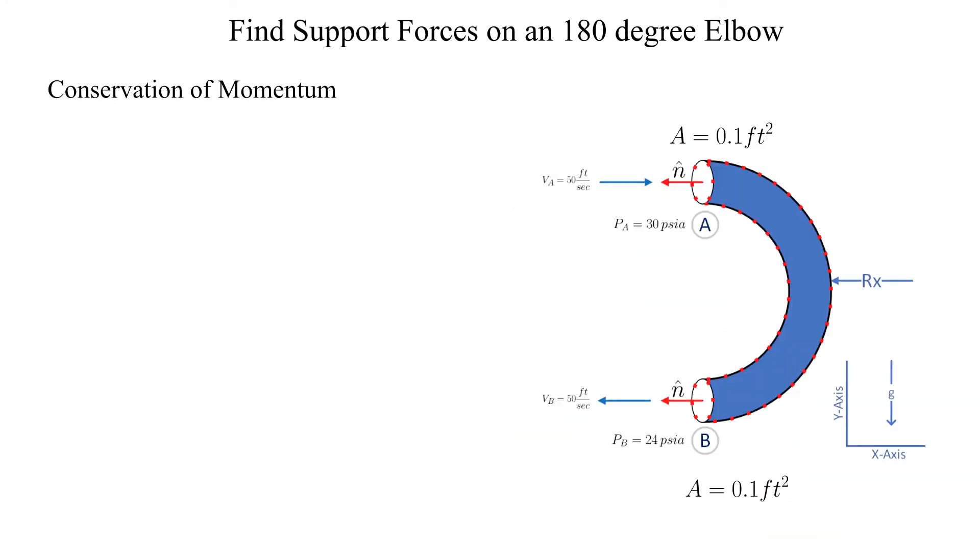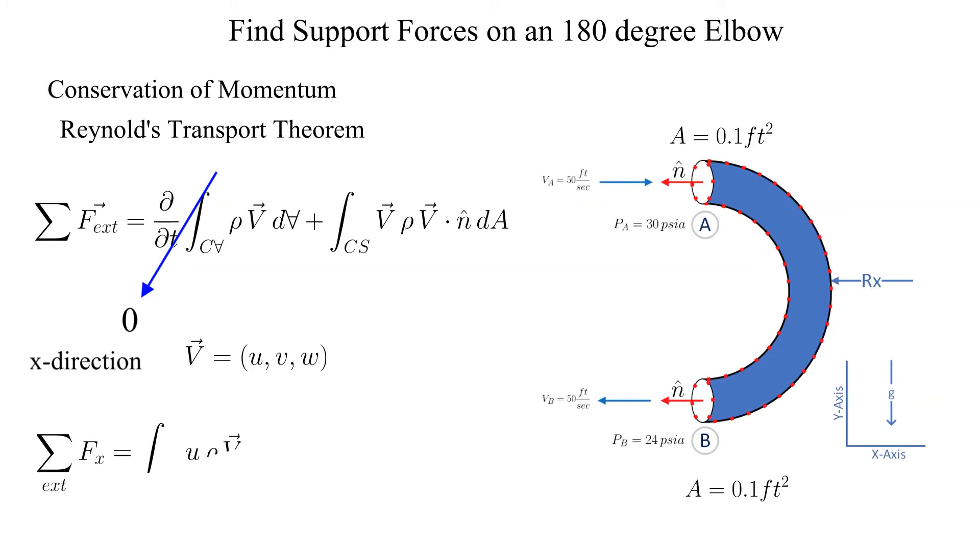Let's start with conservation of momentum. Using the Reynolds transport theorem we see that the sum of the external forces is equal to the two integrals on the right hand side. Let's simplify for steady state and rewrite it for only the x direction. Note the use of the x component of velocity U.